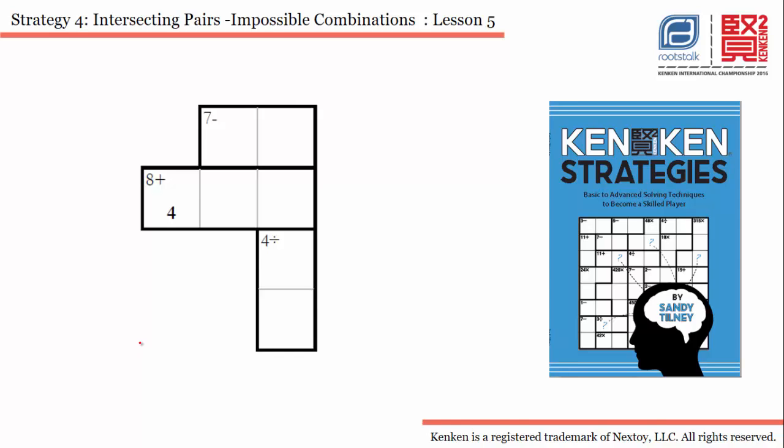Hello everyone and welcome to lesson 5 of Strategy 4: Intersecting Pairs - Impossible Combinations. In this lesson I have taken this sample problem from the book KenKen Strategies. We will see how the strategy can help us solve this particular problem. It is a small part of an 8 by 8 KenKen puzzle, so we can use numbers 1 to 8.